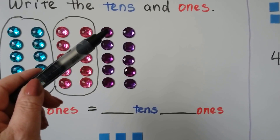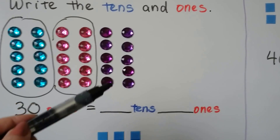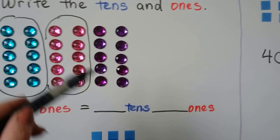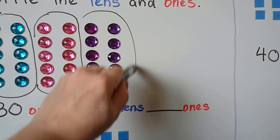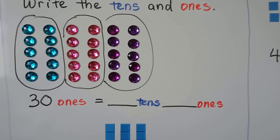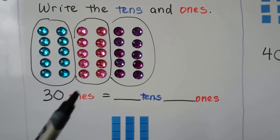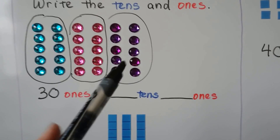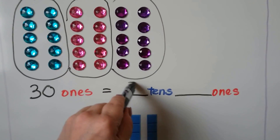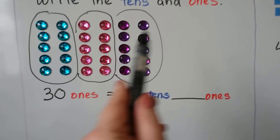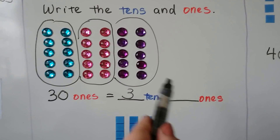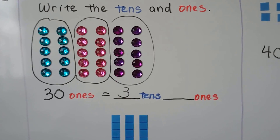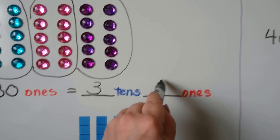And we've got another one — one, two, three, four, five, six, seven, eight, nine, ten. That means we have three tens: one, two, three. And we have no ones. There aren't any ones by themselves on the outside of the groups of ten. So we have no ones — zero.